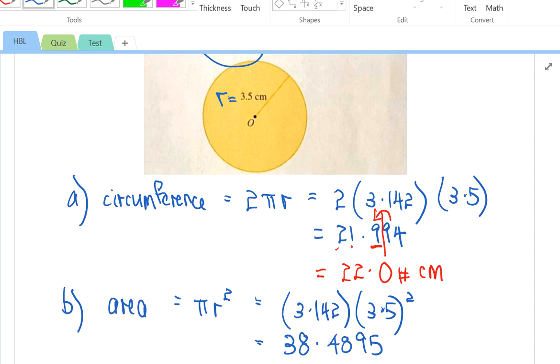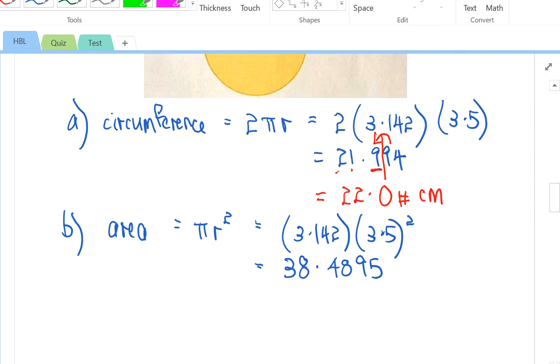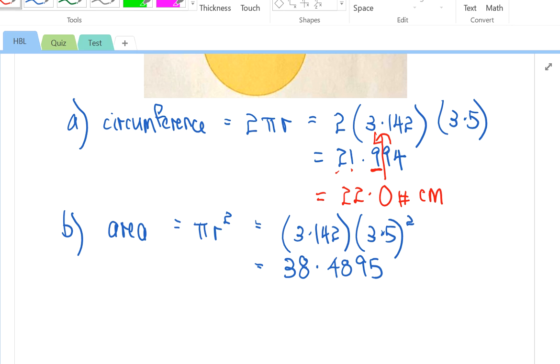If you get 38.4895, you are on the right track. But is this answer good enough? No. Why? I've emphasized all answers must be corrected to 3 significant figures. So, let me look at the third significant figure. 1, 2, 3. This is the third one. Look at the number behind. It's bigger than 5, so I will have to round up. So, I have to round up the 4 to a 5. And since this is area, it will be centimeter square.